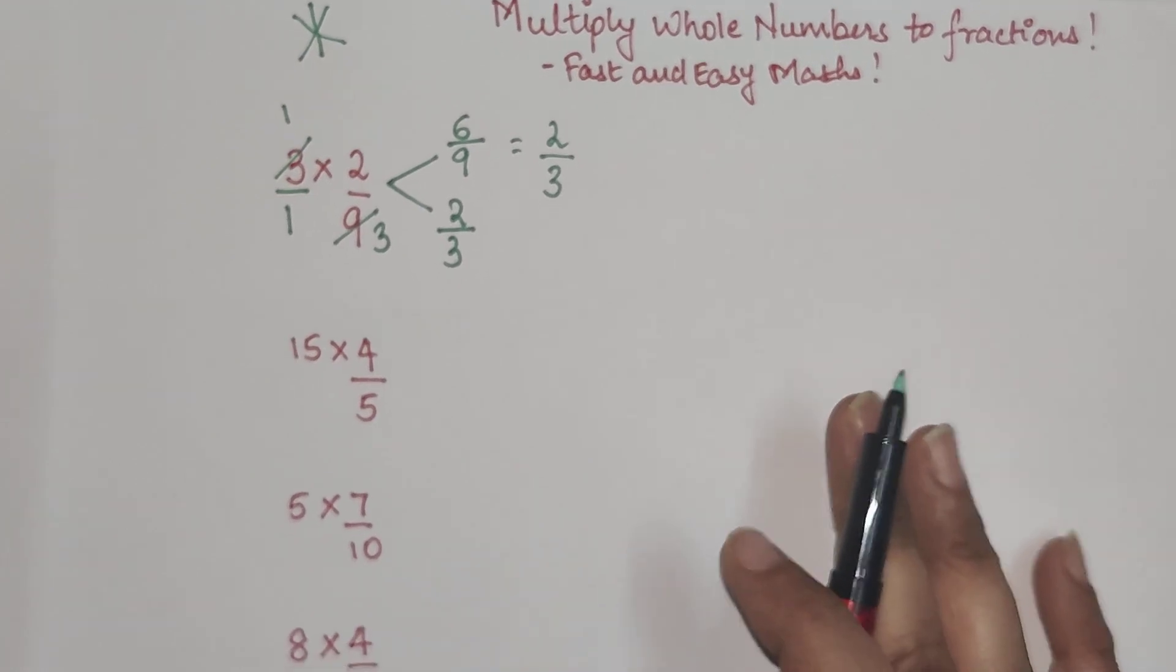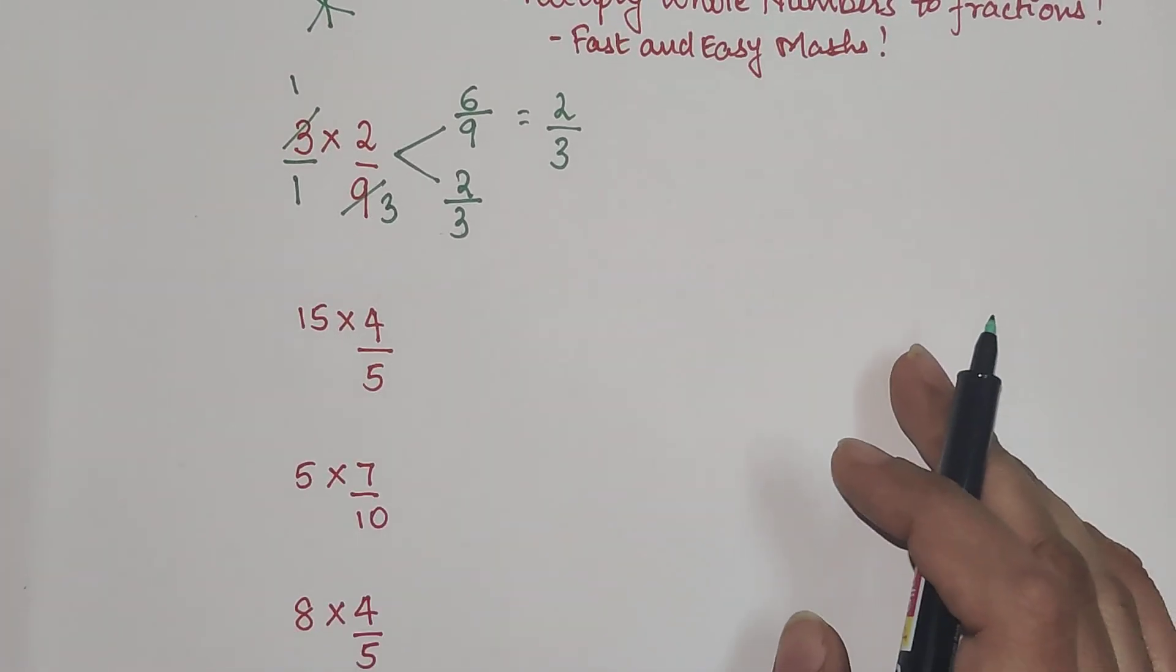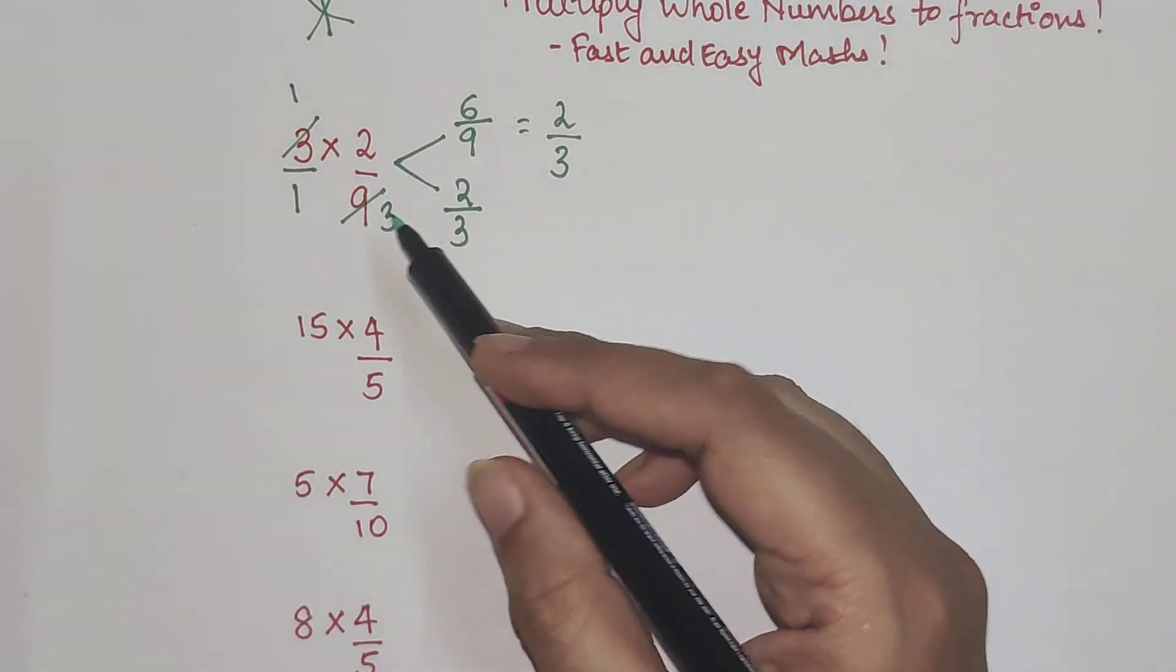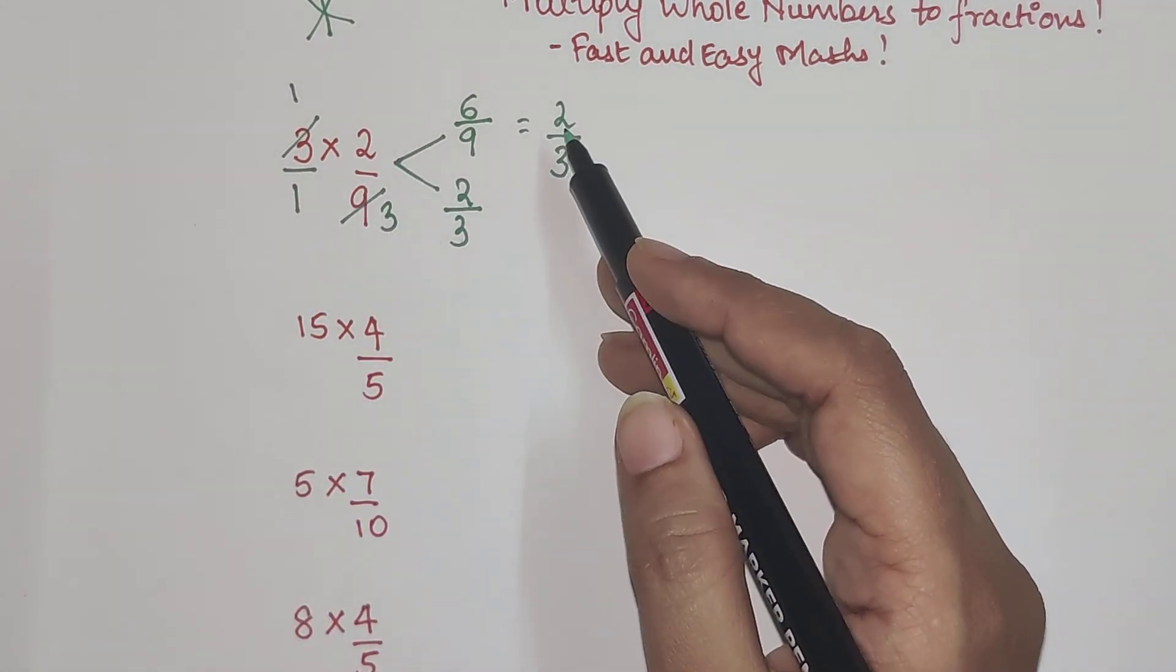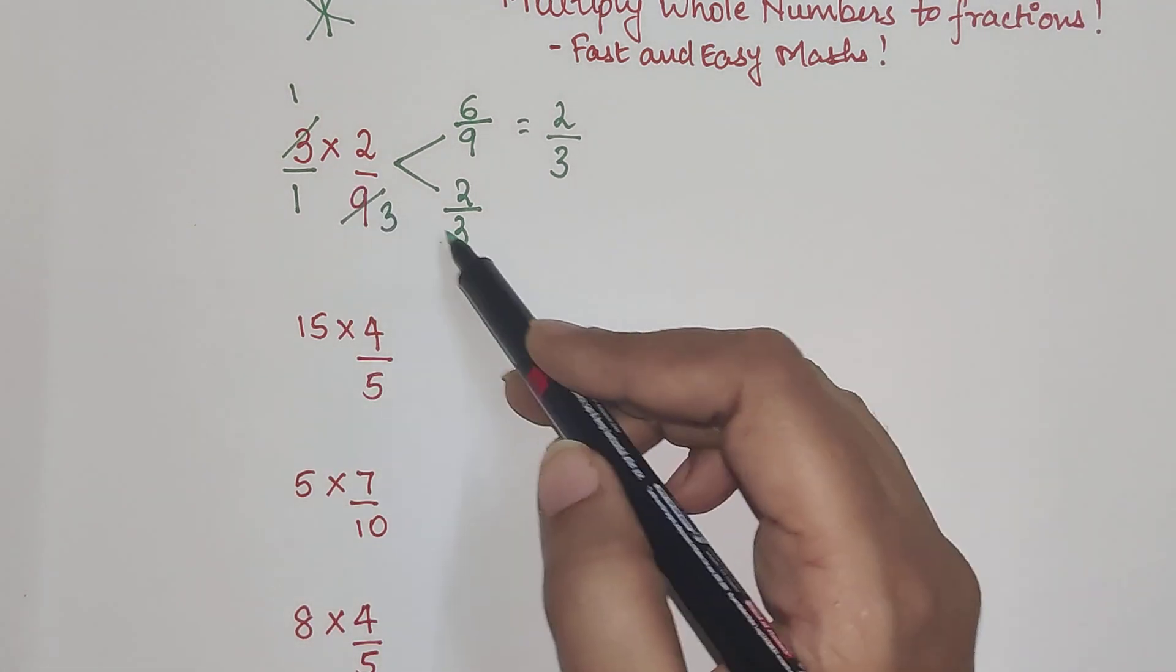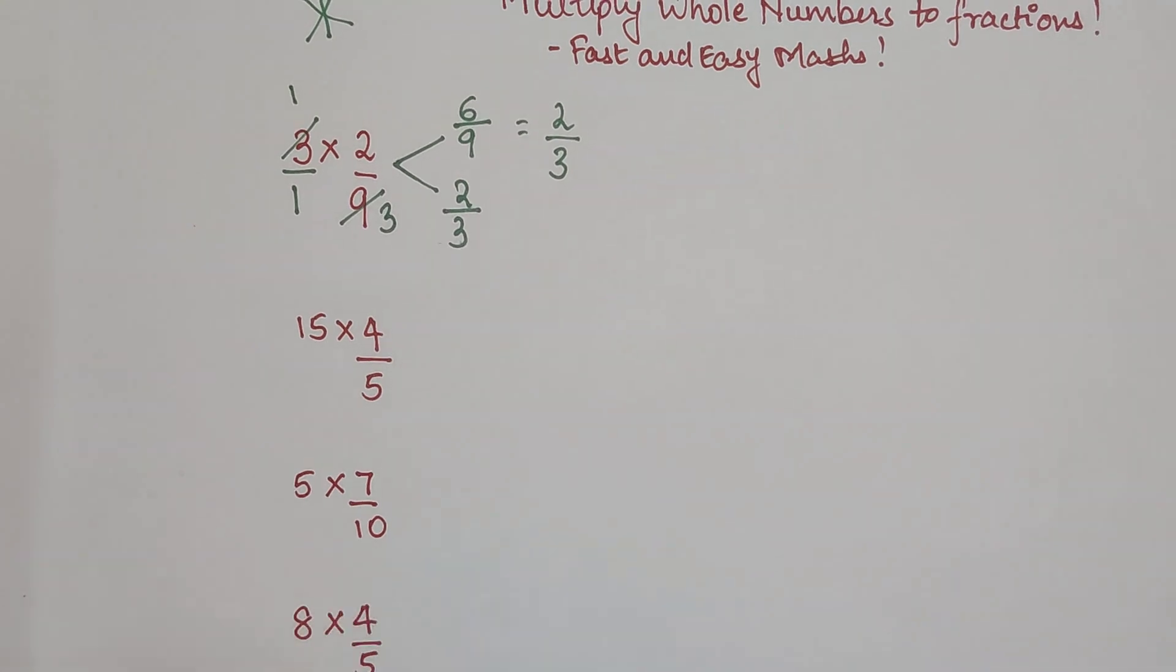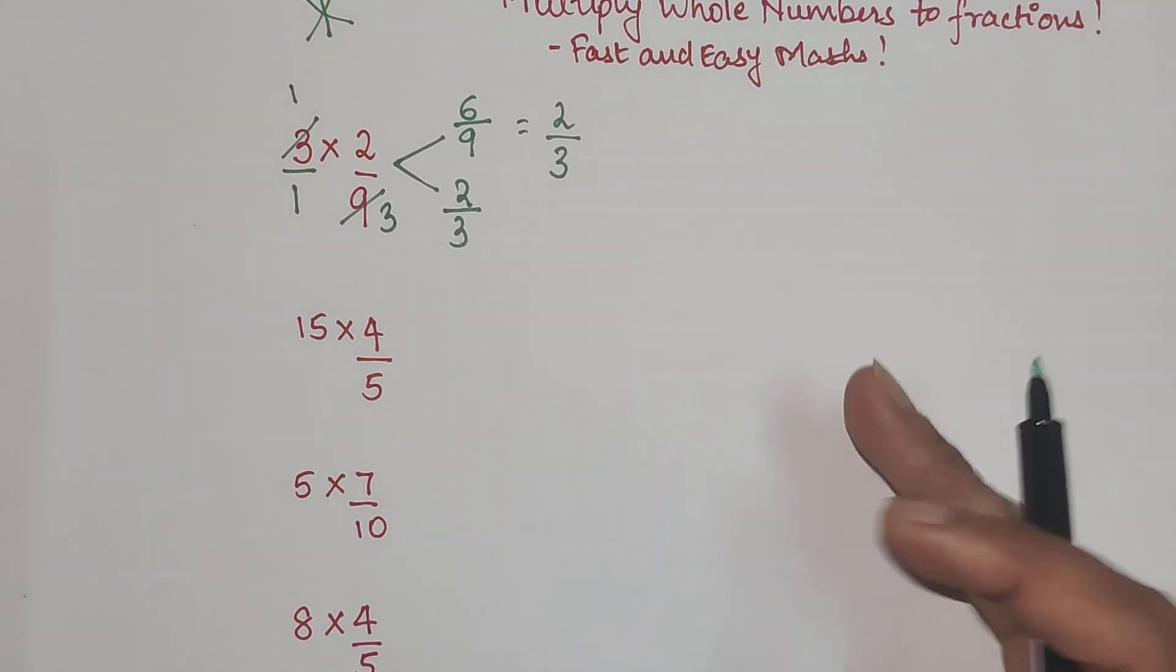So these are the two methods to do multiplication of whole numbers to fractions. Now I am leaving it up to you which method you want to follow. So initially if you think that this is getting a bit difficult for you, you can stick to the first method. But sooner or later I would suggest that you follow this method of cancelling directly because then you will be ending up saving lot of time.